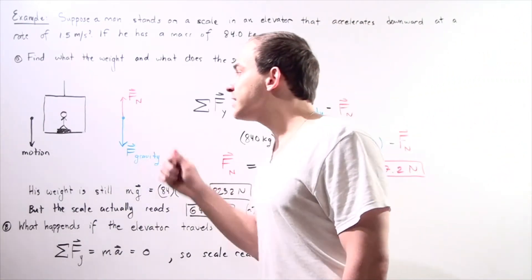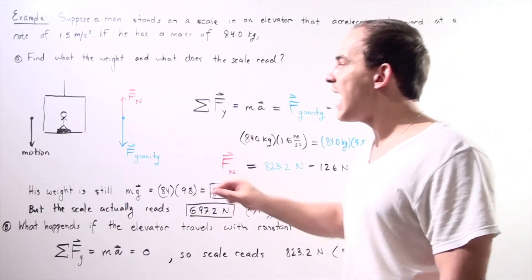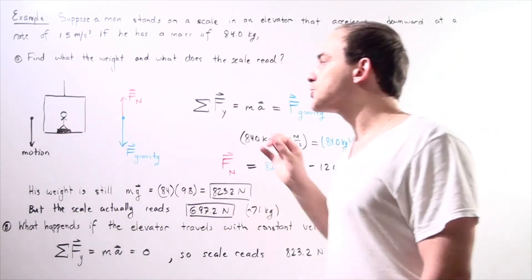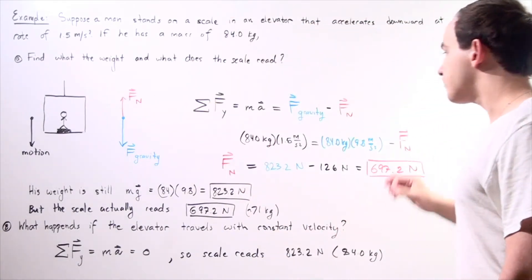Once again, the person is being pulled downward by the force of gravity. At the same time, the scale exerts a force upward called the normal force on the person.